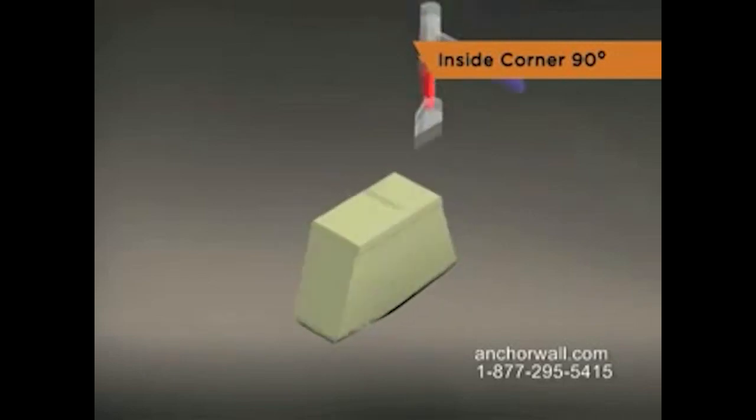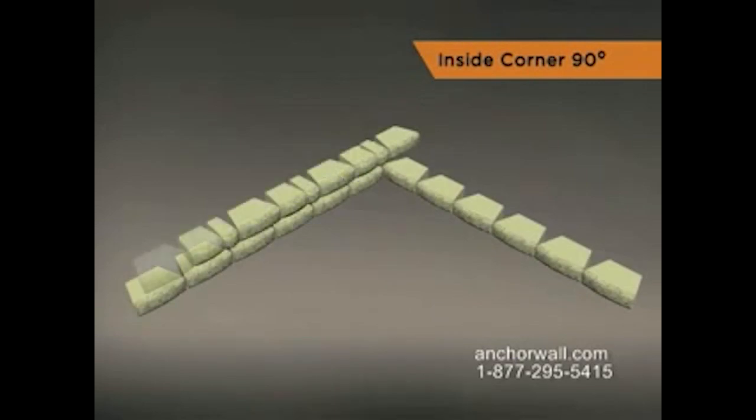You'll need to remove the rear lip on blocks that overlap the lower course. Place all blocks on a staggered bond, then complete the second course of the adjacent wall.